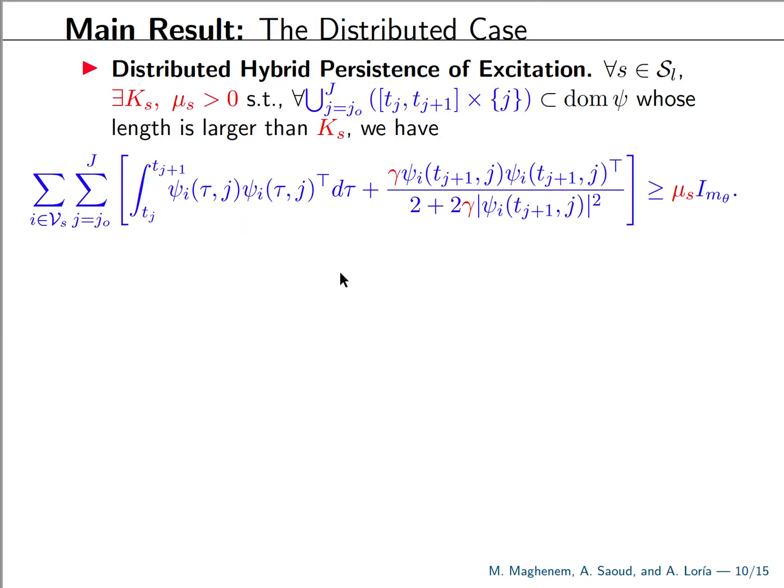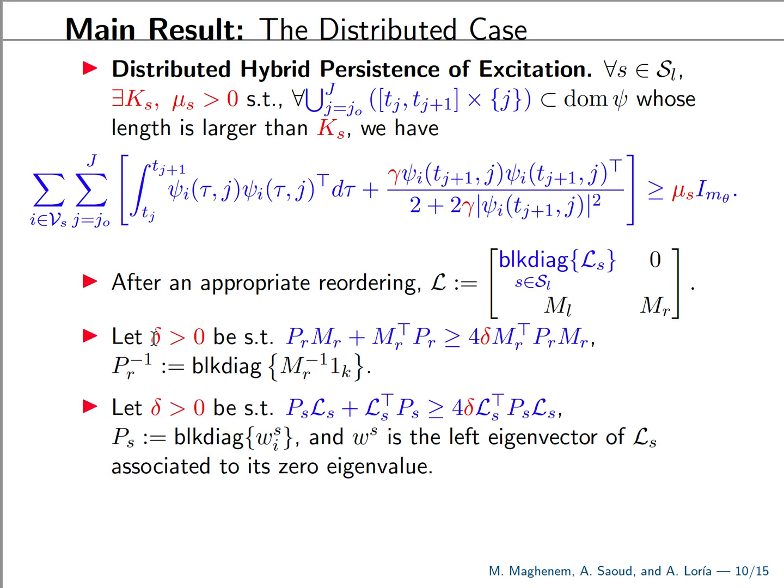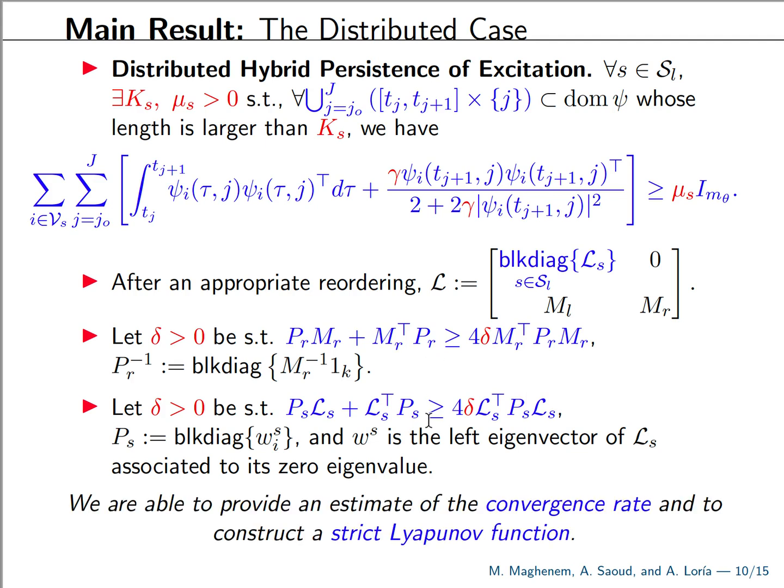Our main assumption is the following distributed hybrid PE condition. So every strongly connected subgraph that is a leader has to verify this hybrid PE condition. Furthermore, under our graph condition, we can decompose our Laplacian matrix as follows. So here we identify the Laplacians of the strongly connected subgraphs that are leaders. So they don't receive information. That's why we have zero here. And they provide information. That's why we have the term here in ML. So our discrete time update parameter delta has to verify those conditions. So we can always find delta such that these two conditions hold, under which we are able to provide uniform exponential stability, to show uniform exponential stability, provide an estimate of the convergence rate and also a strict Lyapunov function.